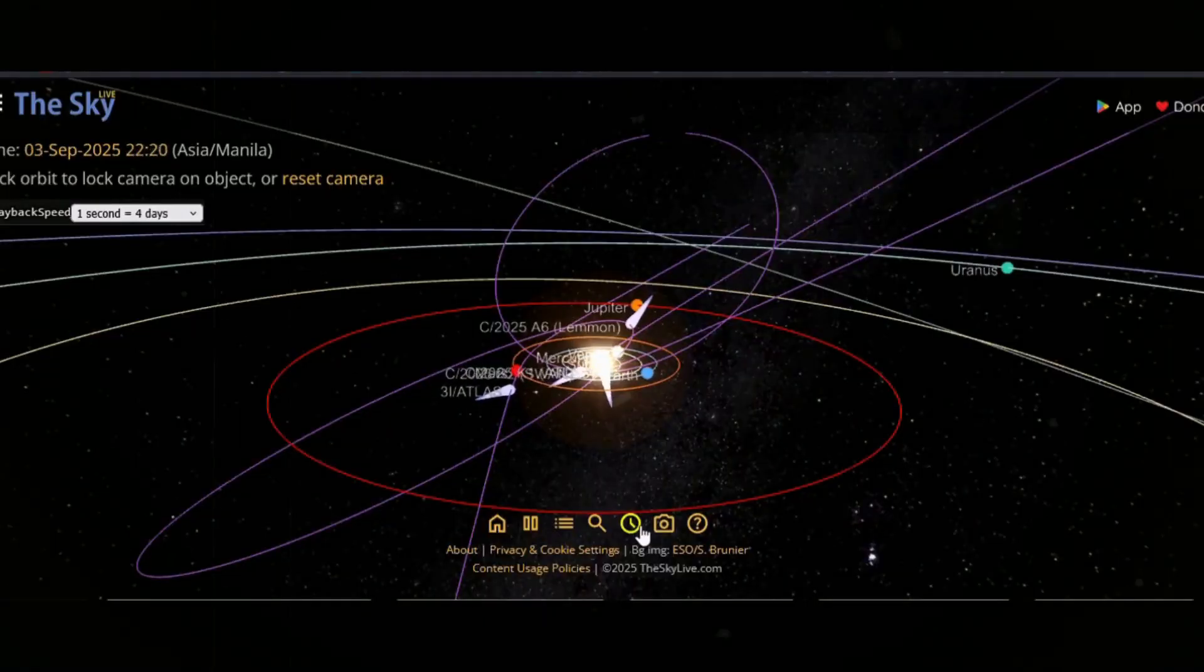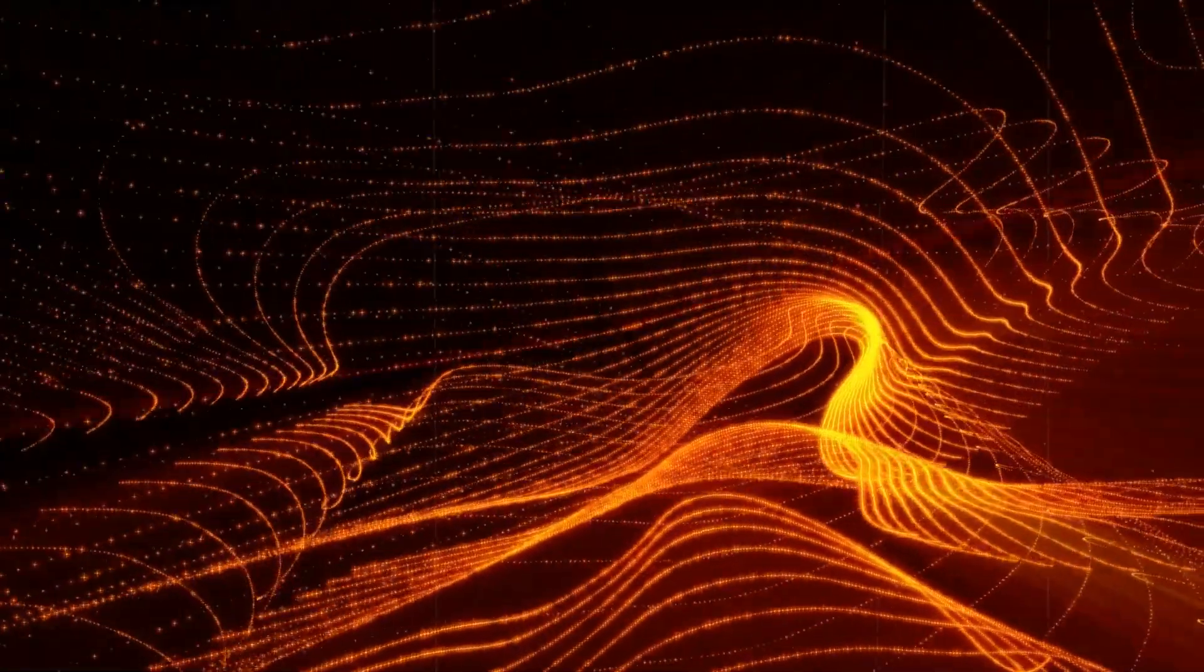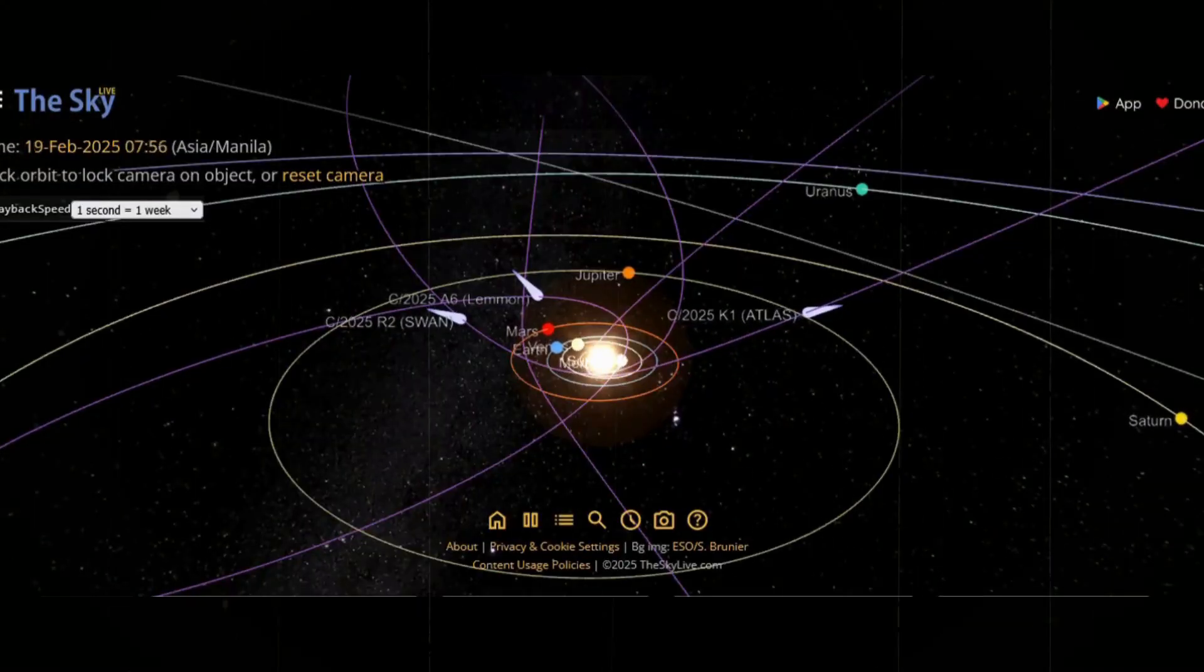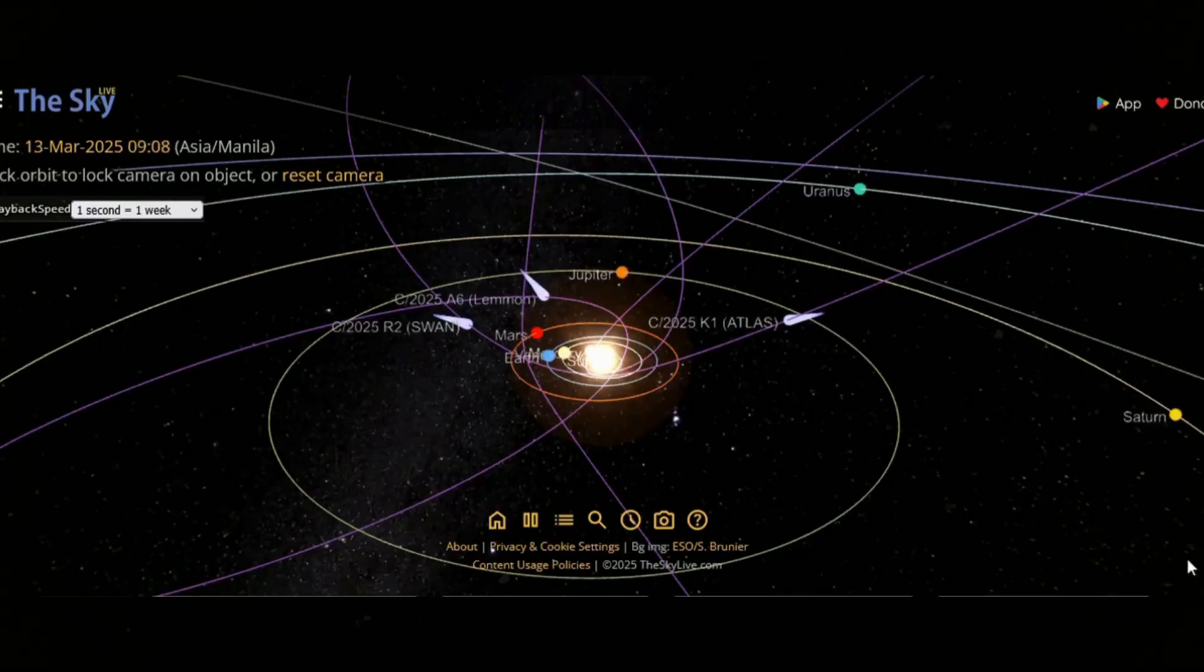Their paths are written in gravity, but their influence may extend through electricity. And with so many inbound at once, the question becomes unavoidable. Are we about to witness a convergence that could change both the sky and the Sun?